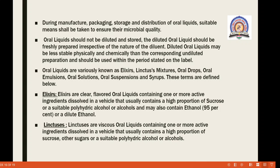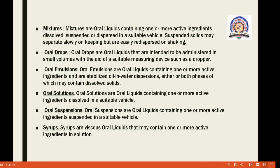During manufacturing, packaging, storage, and distribution of oral liquids, suitable means should be taken to ensure their microbial quality. Diluted oral liquids should be freshly prepared irrespective of the nature of the diluent, as they may be less stable physically or chemically than the corresponding undiluted preparation, and should be used within the period stated on the label. Types of oral liquids include mixtures, oral drops, oral emulsions, oral solutions, oral suspensions, and syrups.